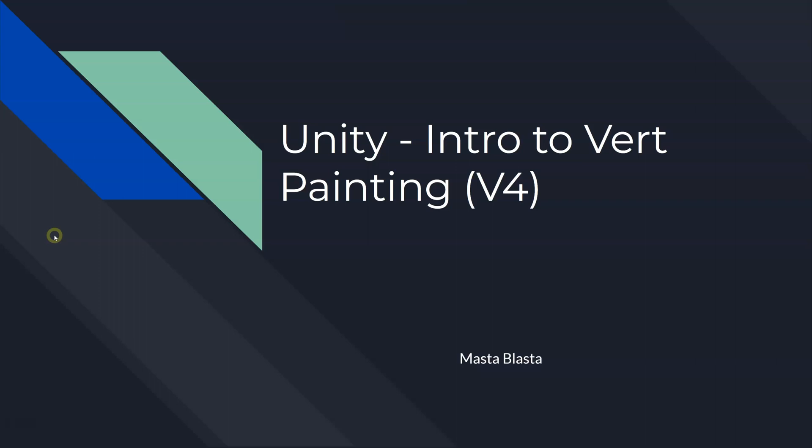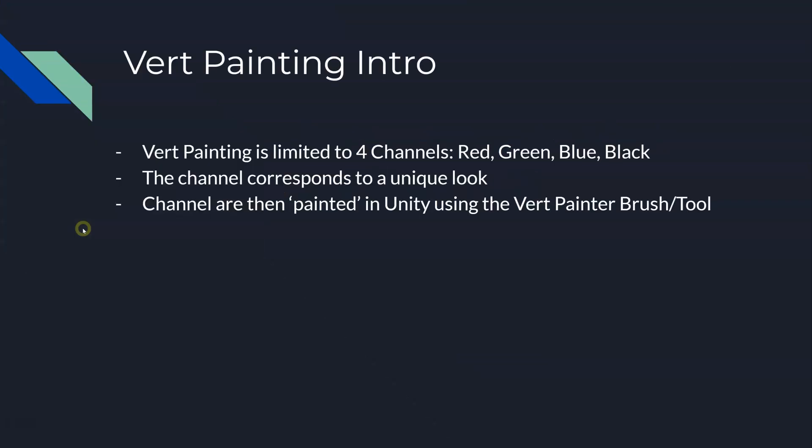So you want to learn how to vert paint in Unity — you've come to the right video. Let's give you a quick intro to vert painting. We'll have to go into some shader theory after this, but I want to at least get you started so you can touch, feel, and do some stuff with it. Vert painting allows you to use a brush to paint red, green, blue, or black channels onto a mesh, and each channel corresponds to a unique look — so it's pretty much infinite possibilities.